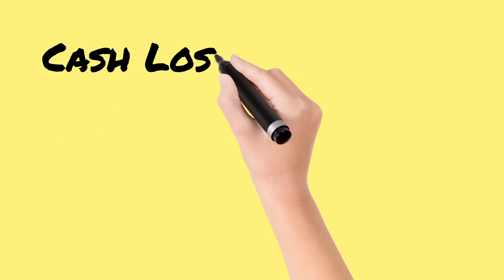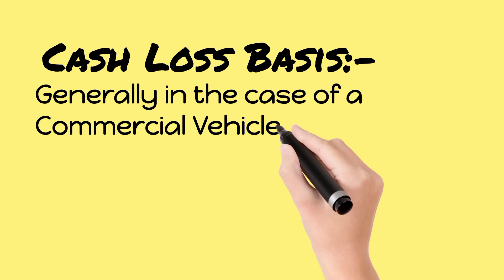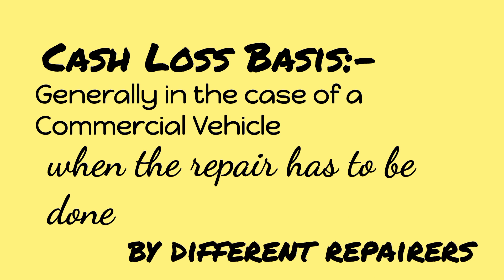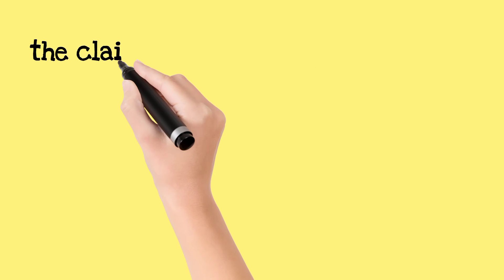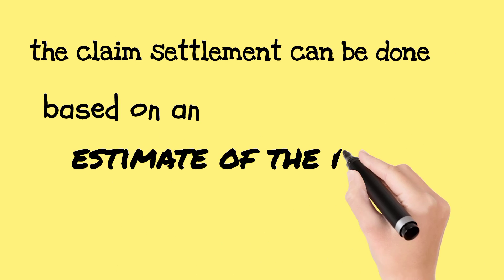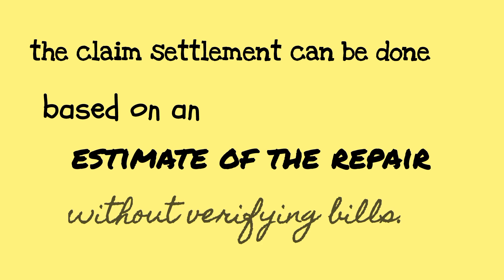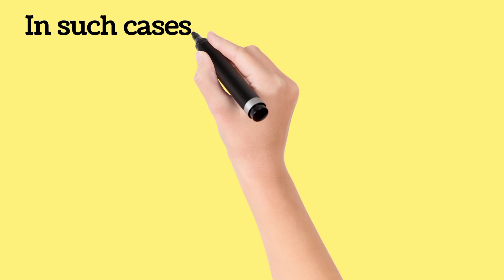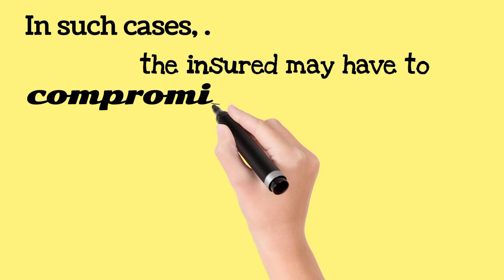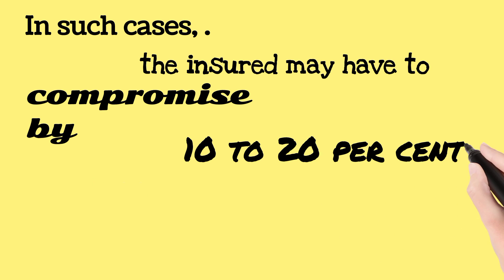Cash loss basis: Generally in the case of a commercial vehicle, when the repair has to be done by different repairers, the claim settlement can be done based on the estimate of the repairer without verifying bills. In such cases, the insured may have to compromise by 10 to 20% less than the estimated repair amount.